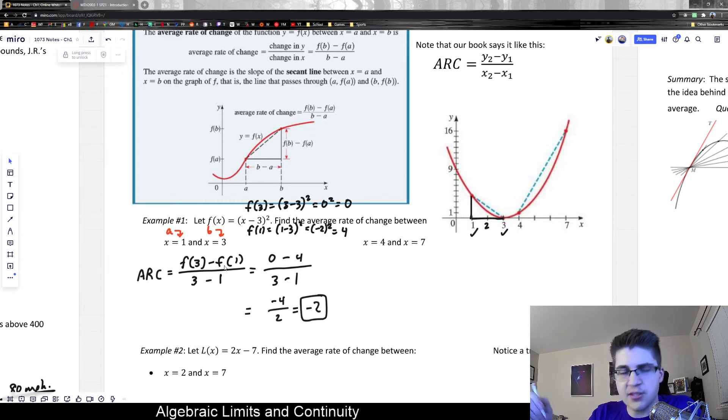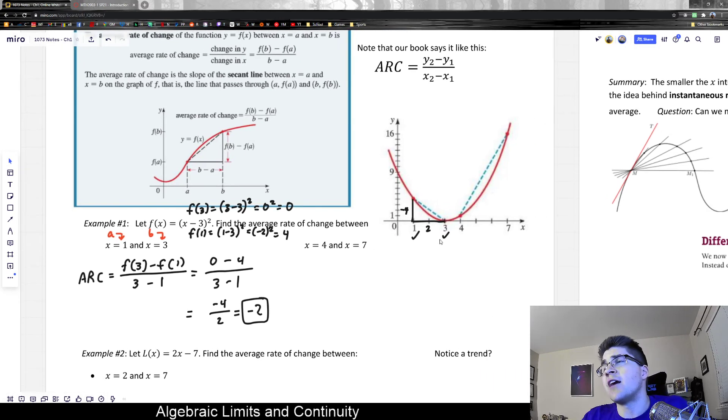So that would be -4 divided by 2 or -2. And ultimately, that would give us our average change on this interval or a slope, which, if we were to look at it, you can see by the graph that this should be negative.